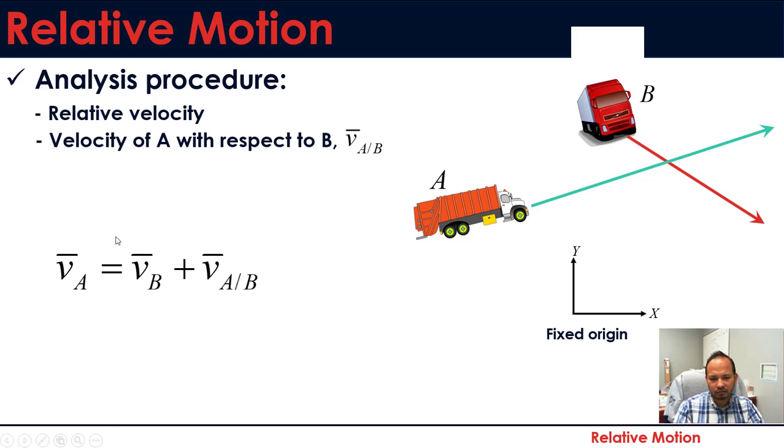VA minus VB, I took the VB on the other side of the equal sign. So we have that equation, we have our fixed origin. And now you see the translating origin will be with respect to B, so now B is the translating origin because we're measuring velocity of A with respect to B.